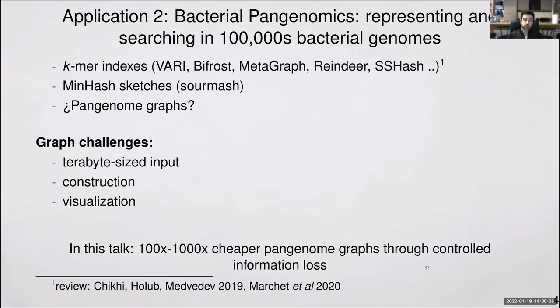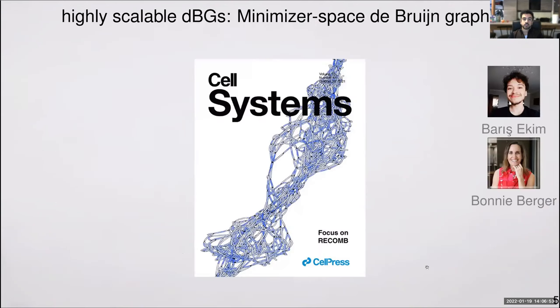So in this talk, I'm talking about a method that will be able to achieve pangenome graphs of bacterial collections quite cheaply through controlled information loss. That's an MDBG thing. It's essentially highly scalable De Bruijn graphs using minimizers. We published it in RECOMB 2021 with my collaborators Barish Hakim and Bonnie Berger, and it's also now available in Cell Systems as a journal version.